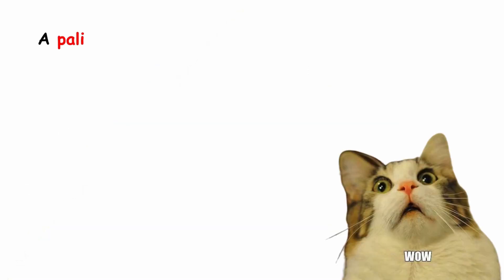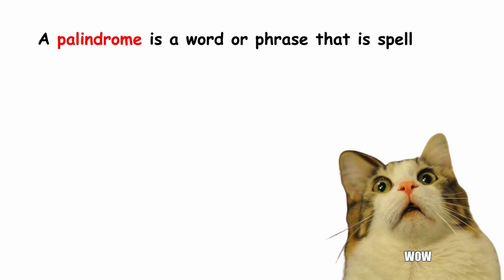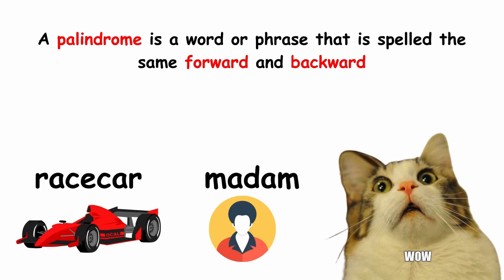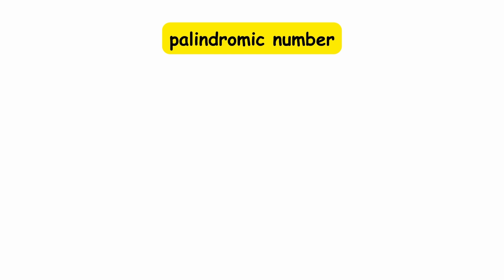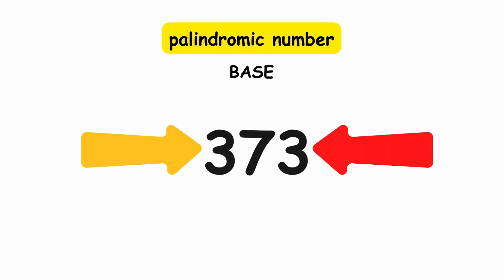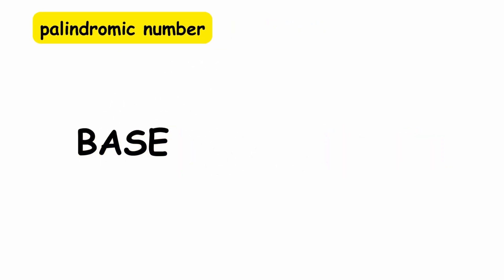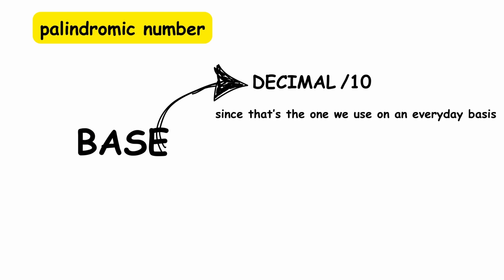Palindromic primes. A palindrome is a word or phrase that is spelled the same forward and backward, like race car, or madam, or a. A palindromic number in a given base is a number whose representation in digits is the same forward and backward, like 373. Most often, the base in consideration is decimal, or base 10, since that's the one we use on an everyday basis.